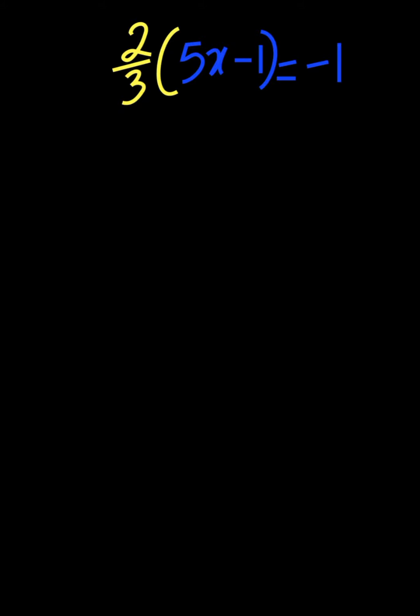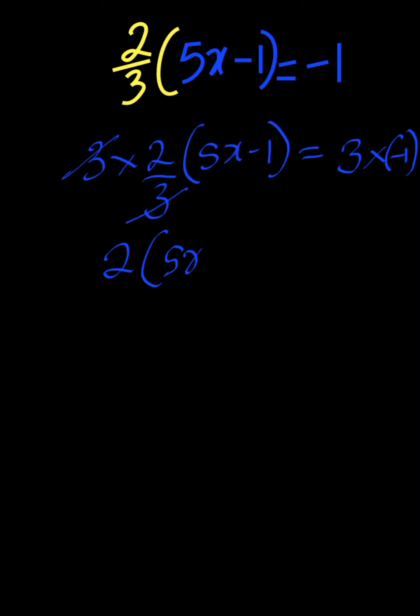By so doing, we shall have 3 multiplied by 2 over 3 to the power of 5x minus 1 is equal to 3 multiplied by negative 1. This way, cancel out, leaving us behind with 2 into 5x minus 1 is equal to 3 times minus 1 is minus 3.